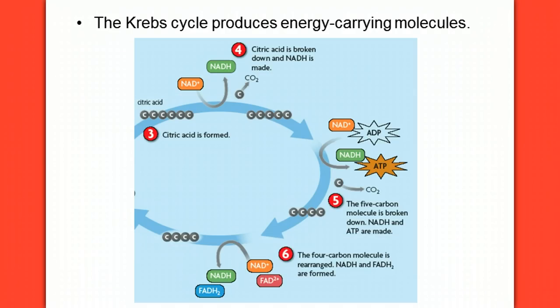So the whole purpose of the Krebs cycle is to produce these energy carrying molecules. Notice everywhere in this circle where NADH or other molecules are being formed. NADH is made up here, NADH is made right here, and NADH is made right here.